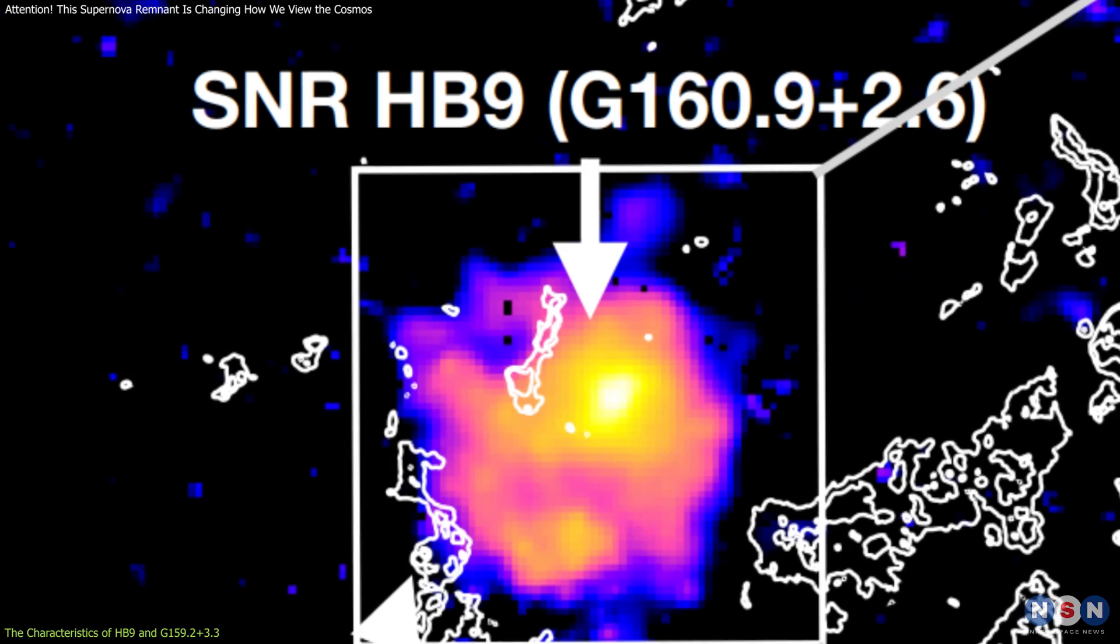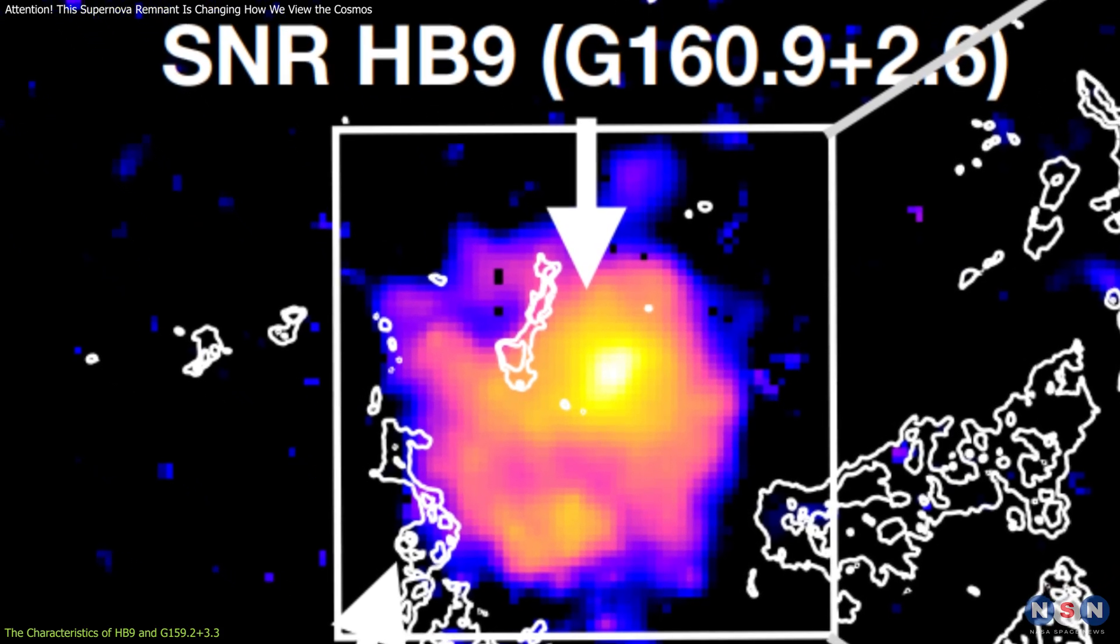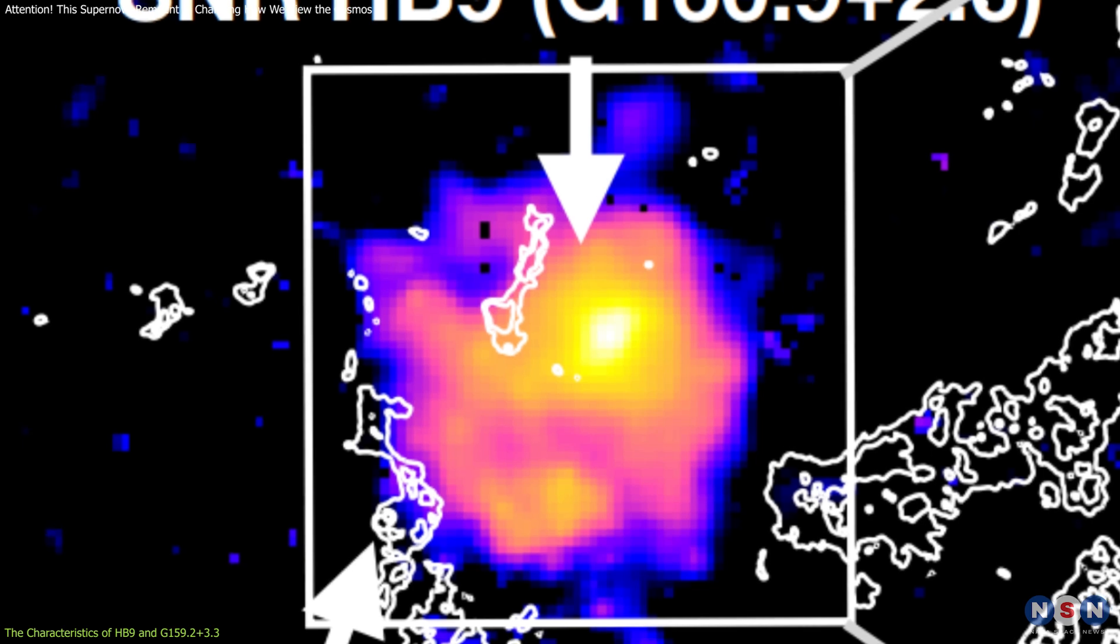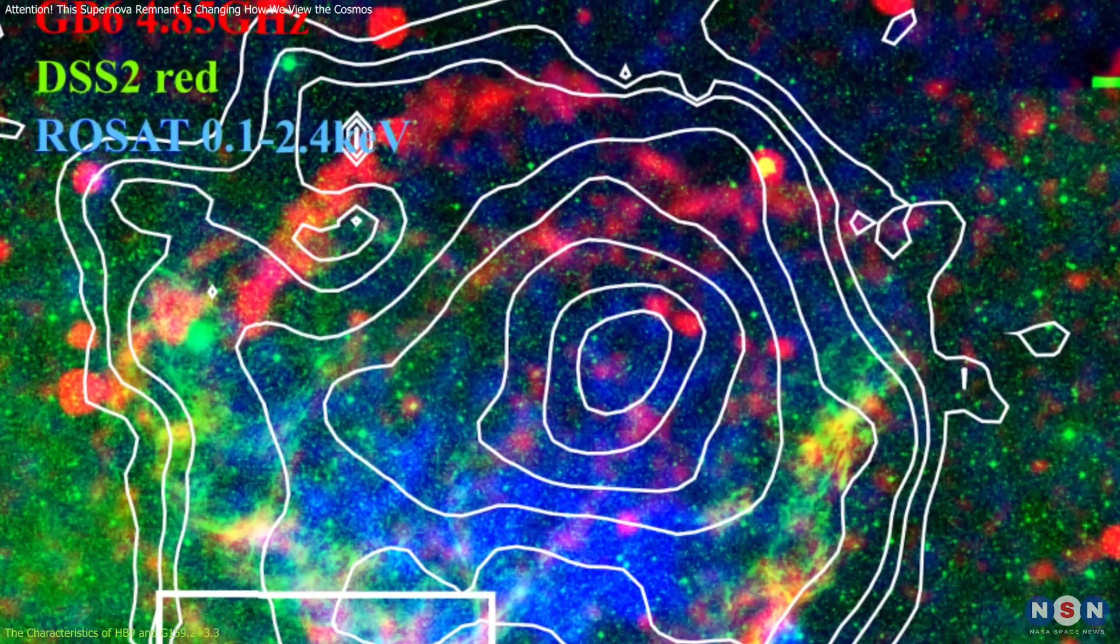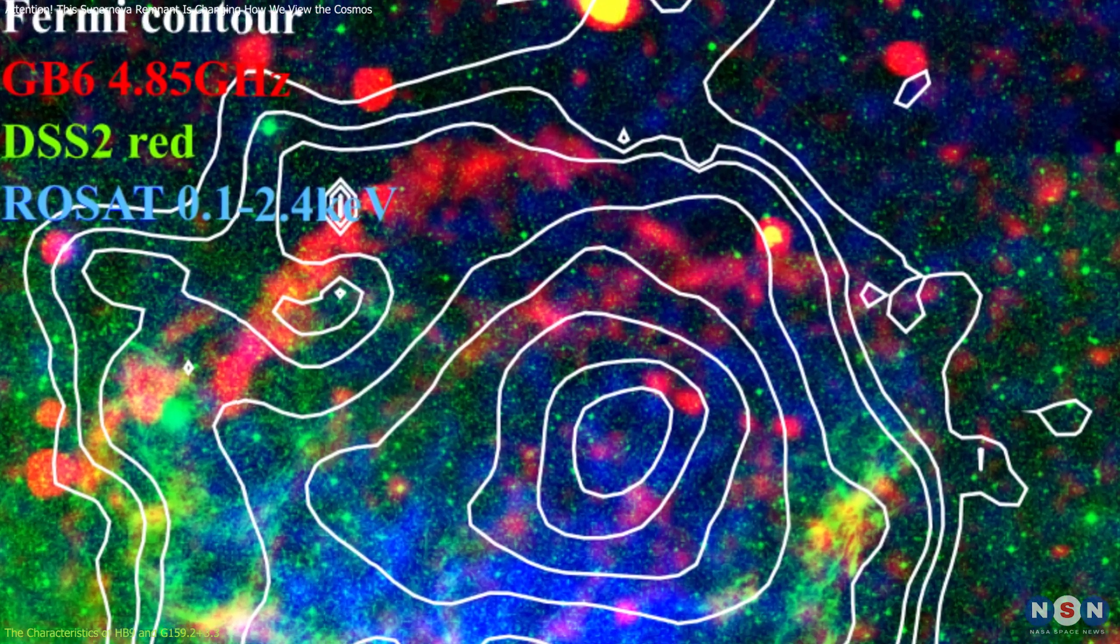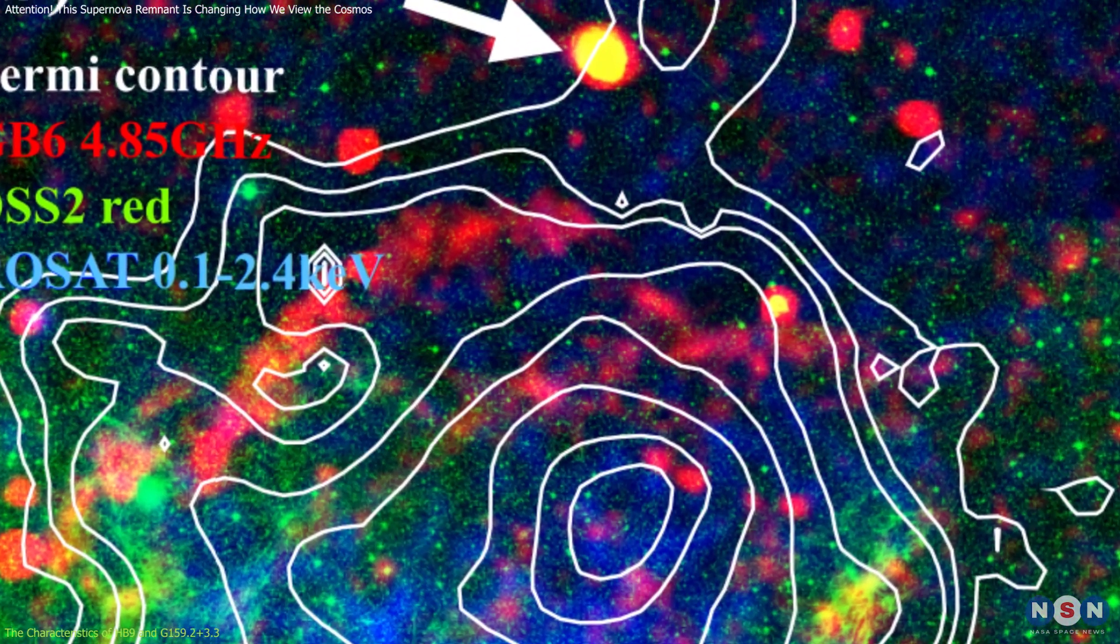With a shell-type morphology that spans approximately 2 degrees in diameter, Hb9 emits bright gamma rays, a feature that intrigues astronomers. But what really sparked curiosity was its proximity to a small, compact H2 region.